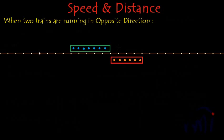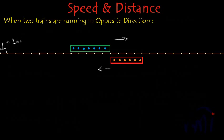The green train is running in one direction and the red train is running in the opposite direction. Each partition on the line represents 10 meters, so each division is actually representing 10 meters.